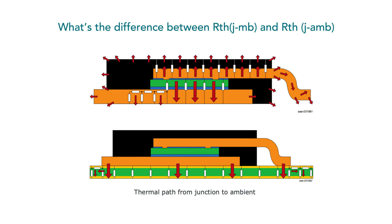The thermal resistance junction to ambient describes the ease with which the heat is conducted from the junction to the ambient. The PCB and cooling design contribute the most of it, so it differs in each application.